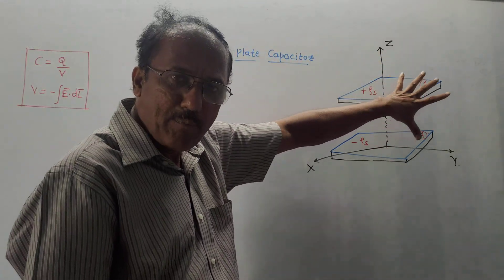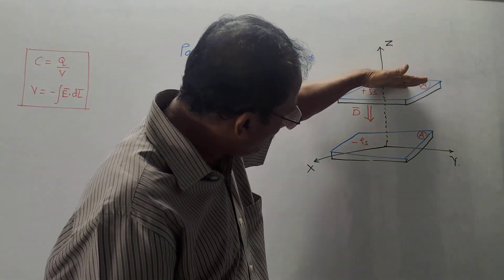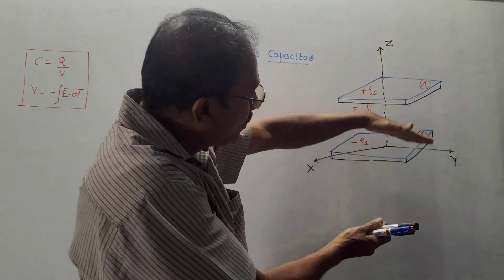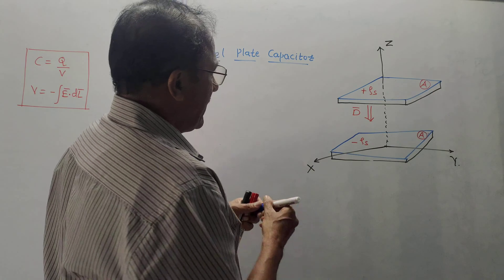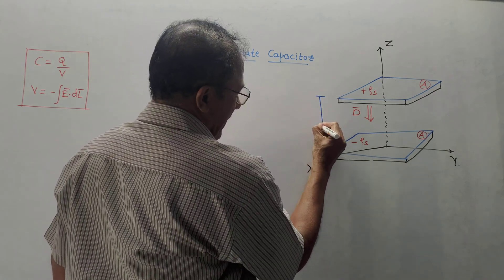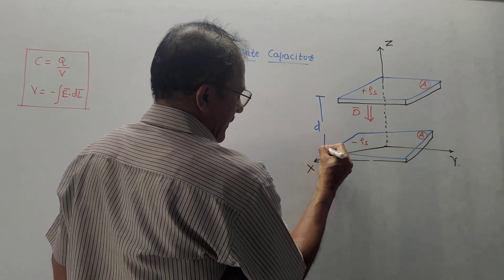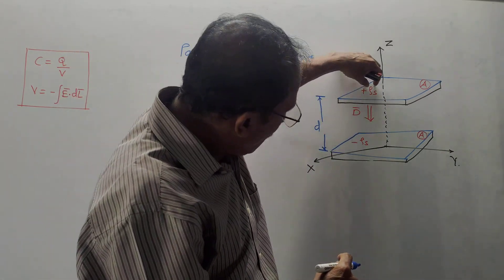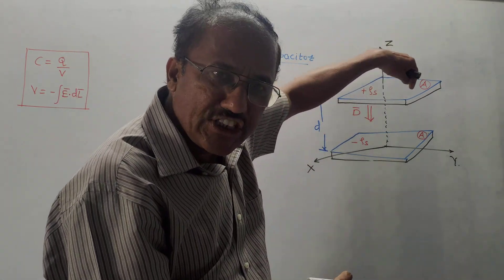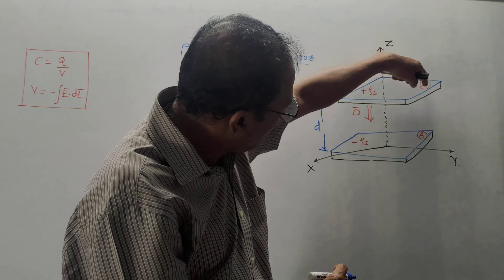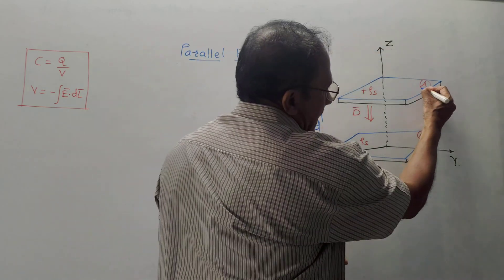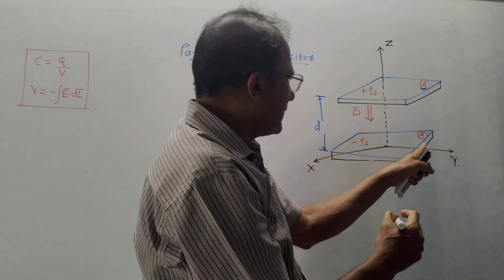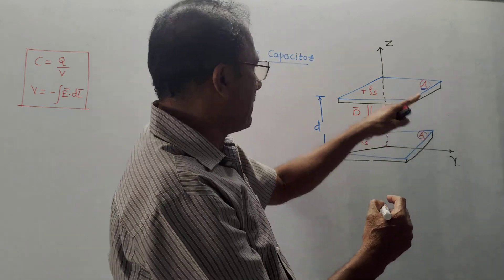This is the diagram of the parallel plate capacitor. There are two plates, and as the name indicates, these two plates are parallel to each other. The distance between these plates is small d. We will assume that ρs, which is surface charge density, plus ρs is deposited on the upper plate. A indicates the area of each plate — lower plate as well as upper plate.